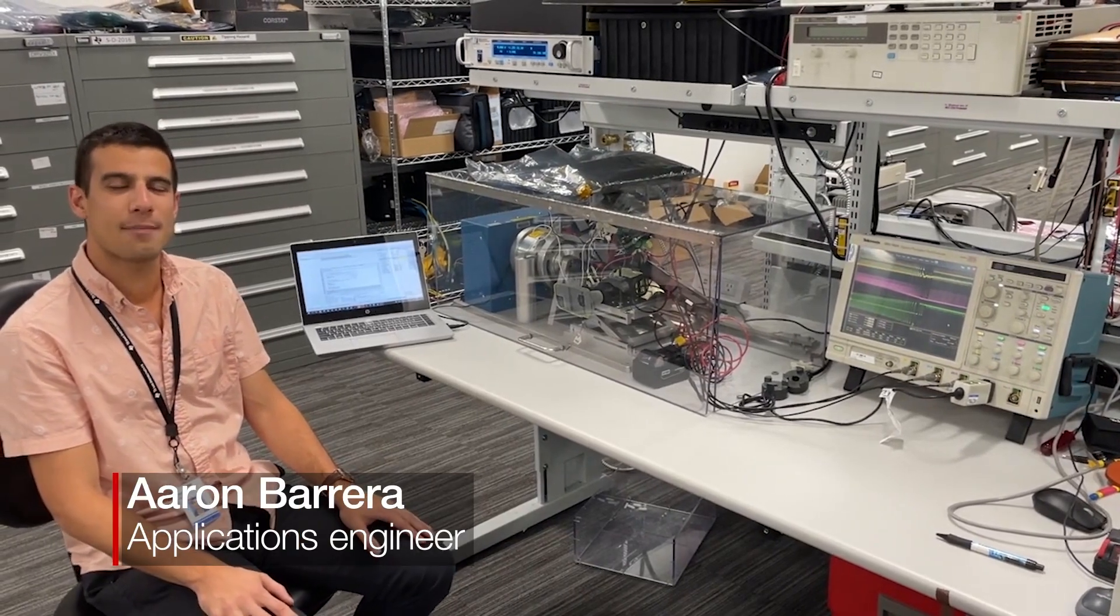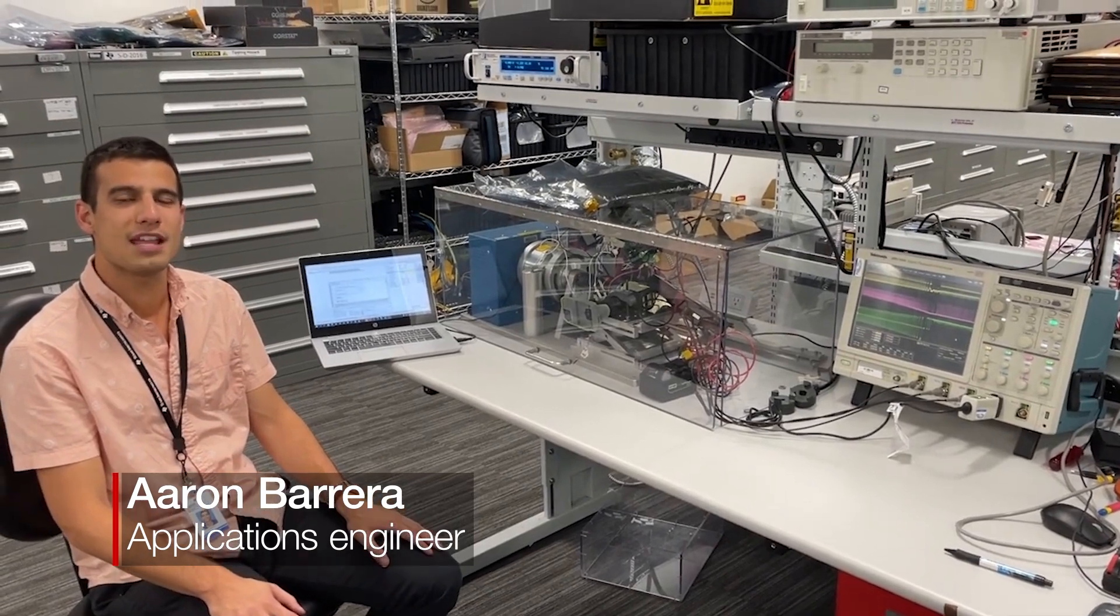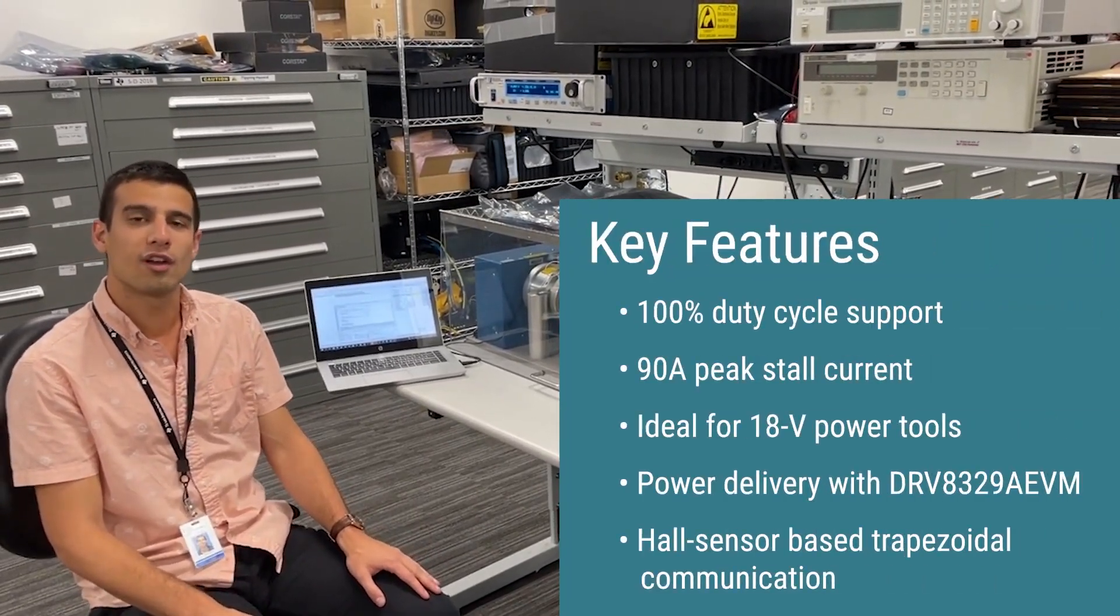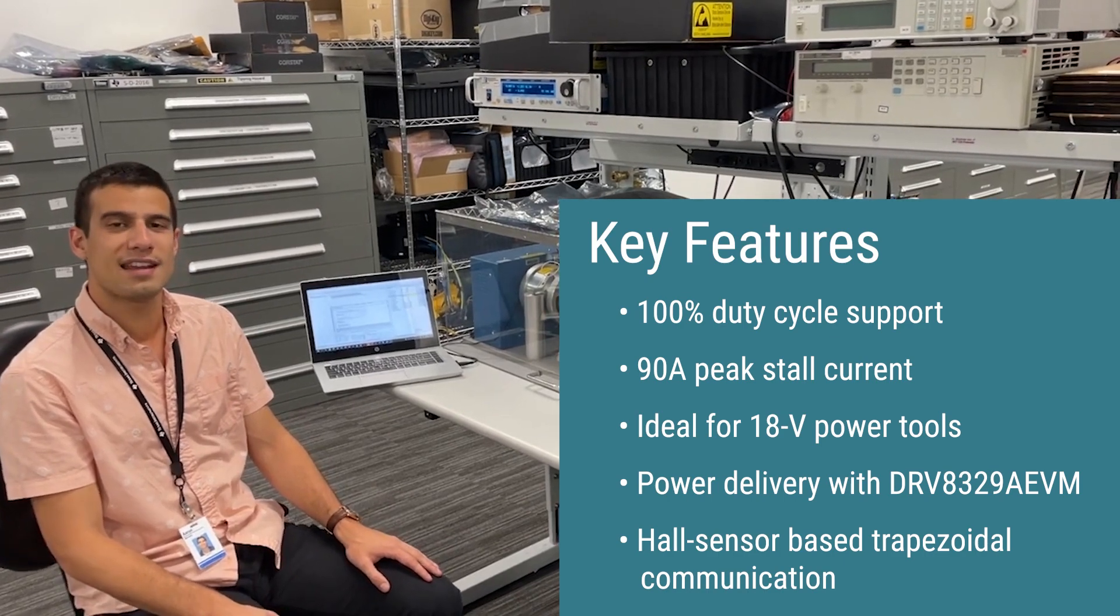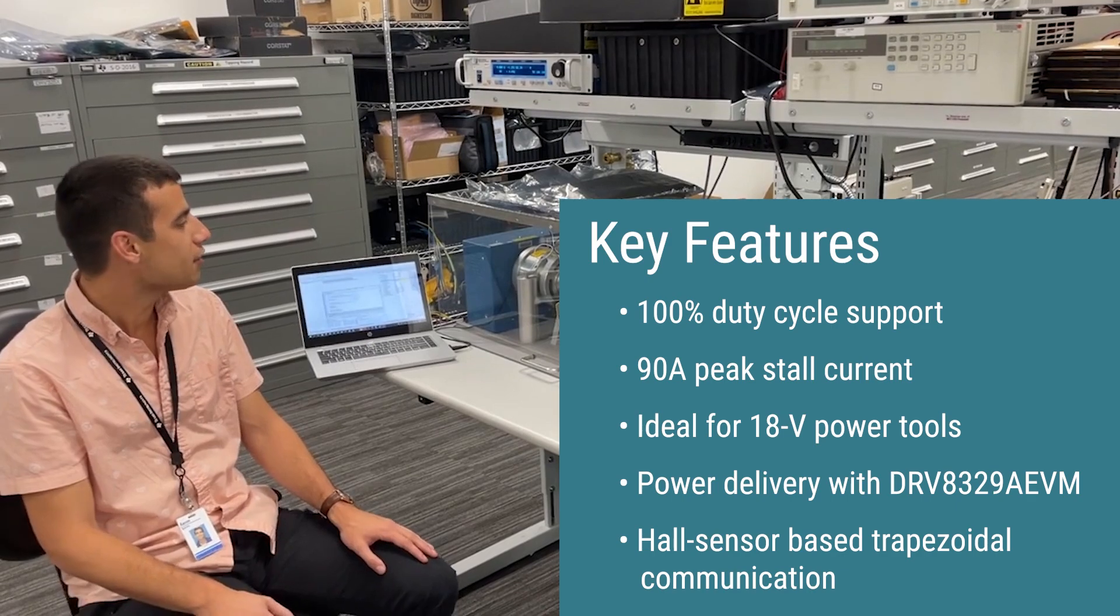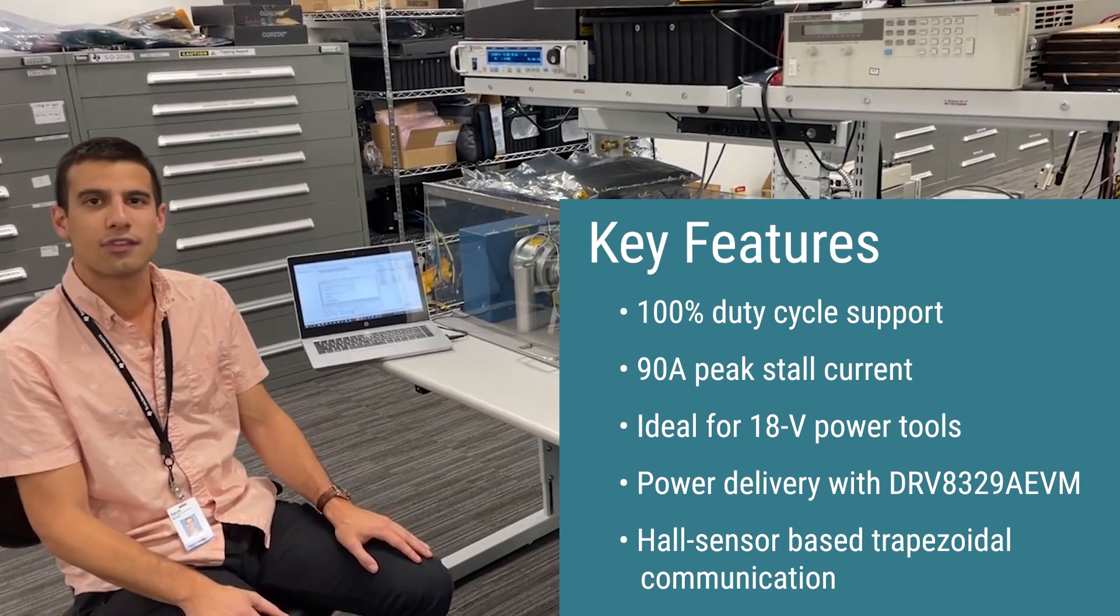In this demo, I will be spinning a power tool using the DRV-8329A EVM. I'm going to spin the power tool with 100% duty cycle up to 90 amps of stall current using an 18-volt battery, the DRV-8329A EVM, and a sensored trapezoidal algorithm.